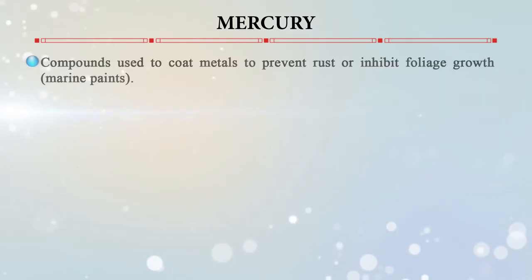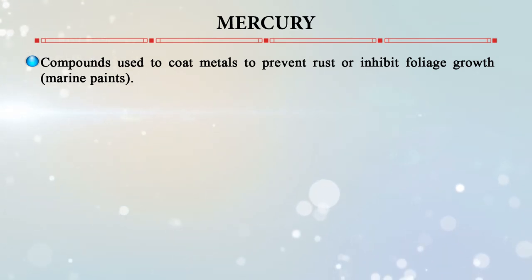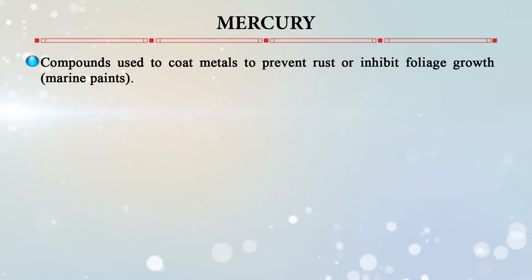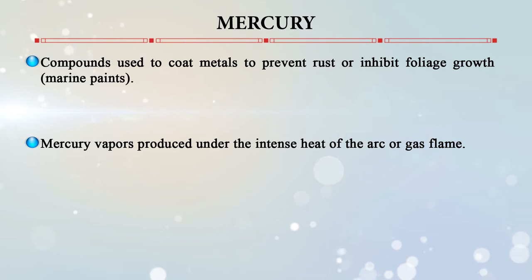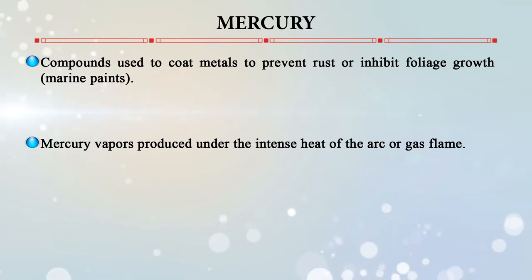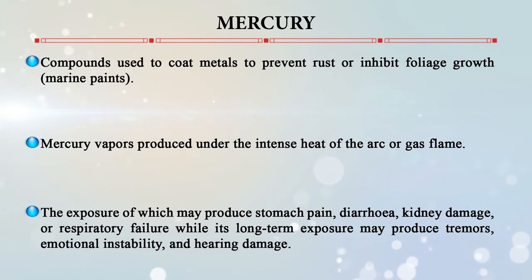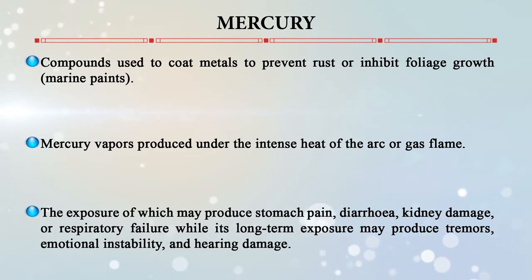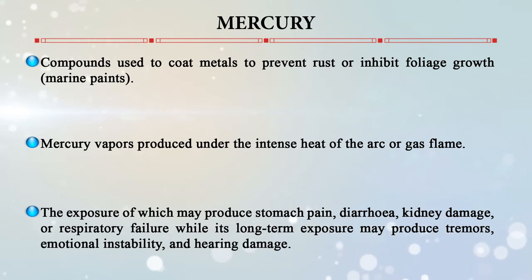Another important toxic compound is mercury. Compounds used to coat metals to prevent rust or inhibit fouling growth, especially in marine paints, produce mercury vapors under the intense heat of an arc or gas flame. Exposure to mercury fumes produces immediate stomach pain, diarrhea, and kidney damage or respiratory failure. Long-term exposure produces tremors, emotional instability, and hearing damage.